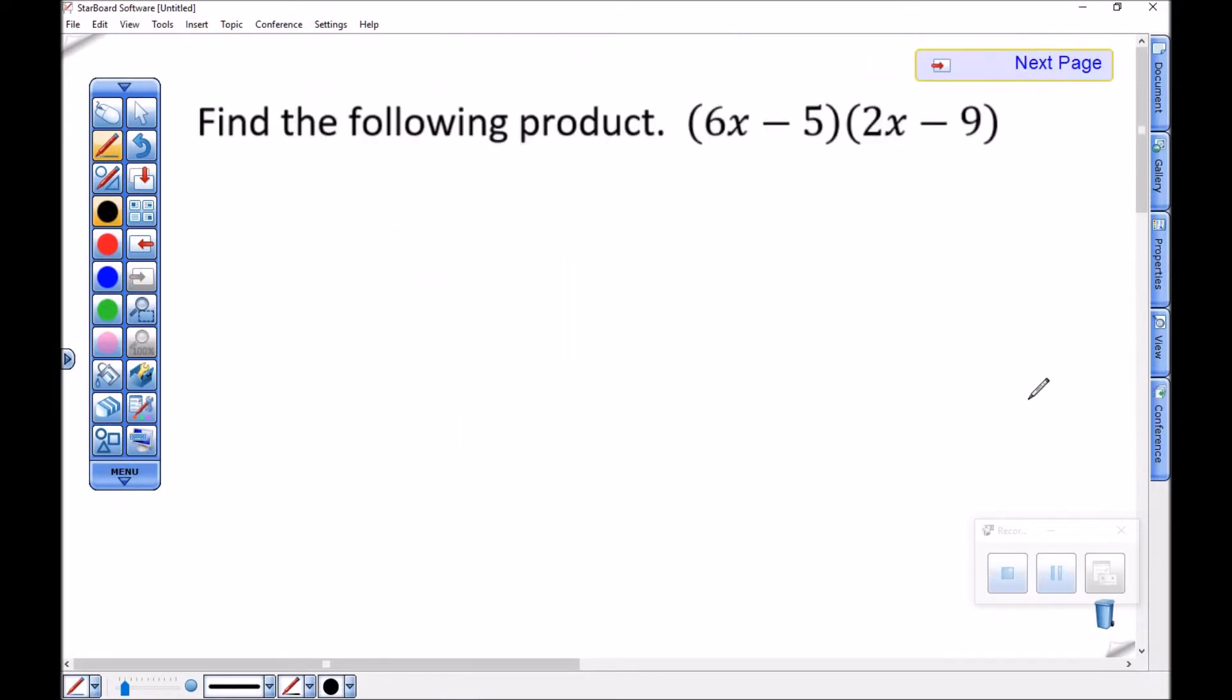One more example. I've got 6x minus 5 times 2x minus 9. Let's start with the first. First times first, so 6x times 2x. And as you get better with these, you can definitely just write down the four factors.